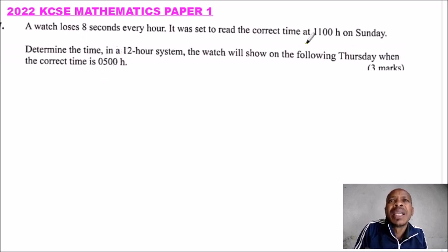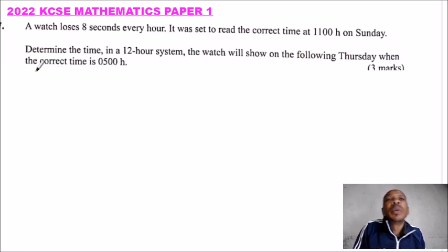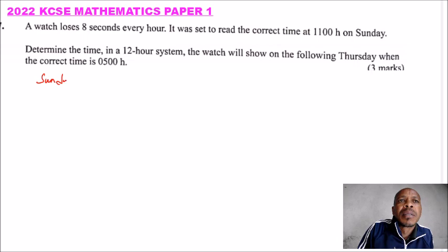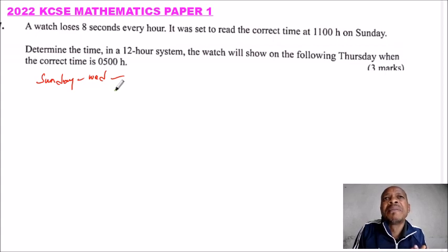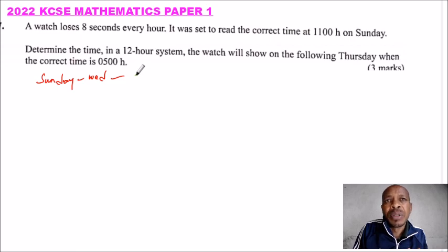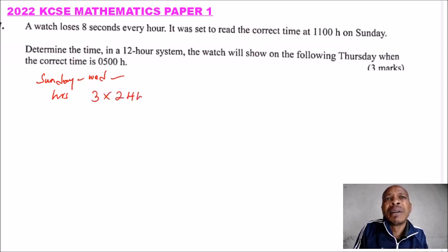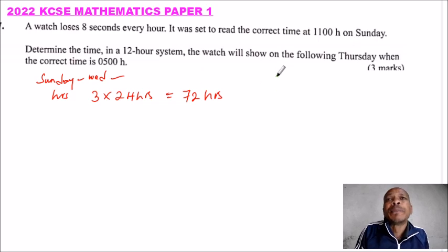To solve this, we need to count the number of hours from Sunday at 11:00 to Thursday at 05:00. From Sunday to Wednesday, we have Monday, Tuesday, and Wednesday — that is three days. Three days multiplied by 24 hours gives us 72 hours.